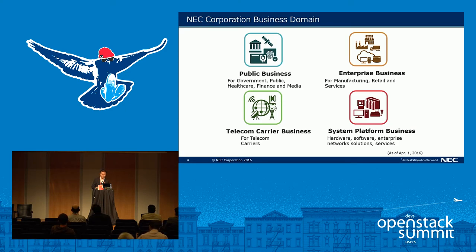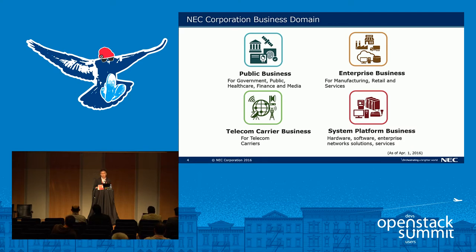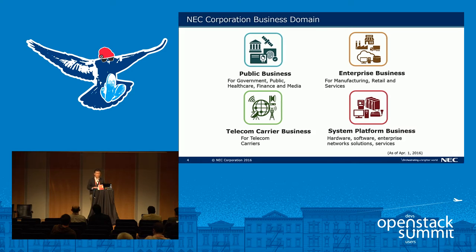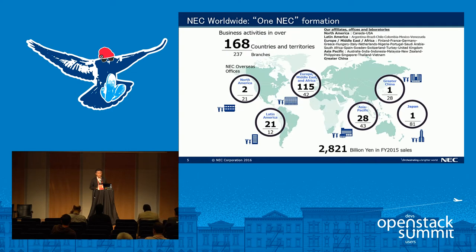Enterprise business covers manufacturing, retail, services, etc. This domain is more cost-sensitive and for IT systems they require business value for their end customers. Enterprise business is the main topic of today's session. We will explain their requirements, background, and our solutions for this domain. System platform is the backend of all business domains and has R&D sections about hardware, software, and solutions. NEC is based in Tokyo, Japan, but we do business in 165 countries and territories with 237 branches worldwide.